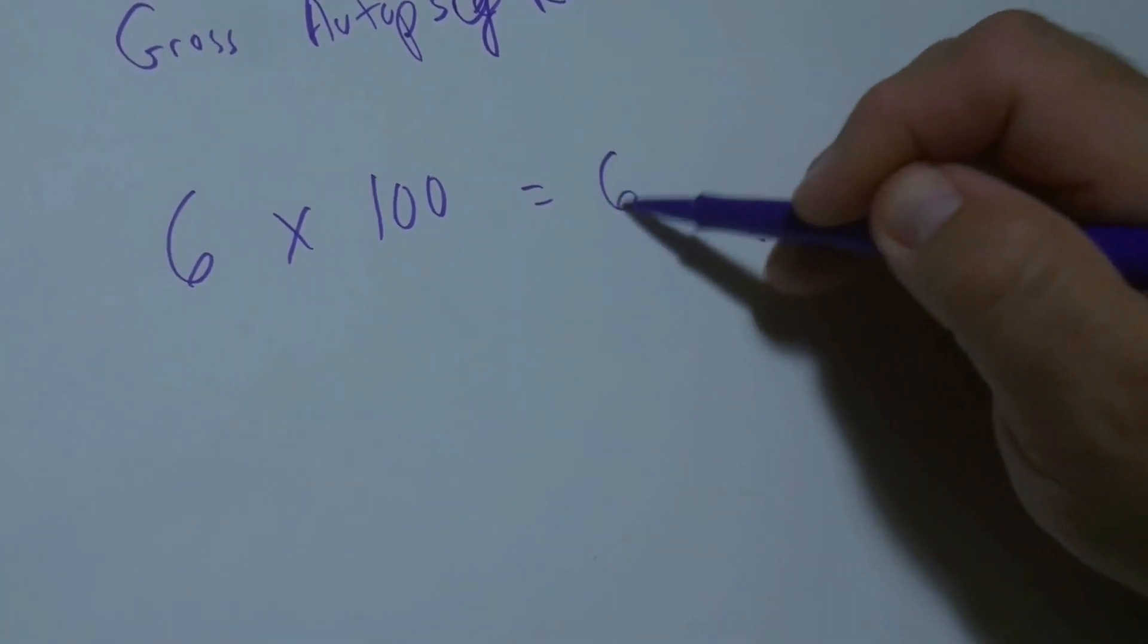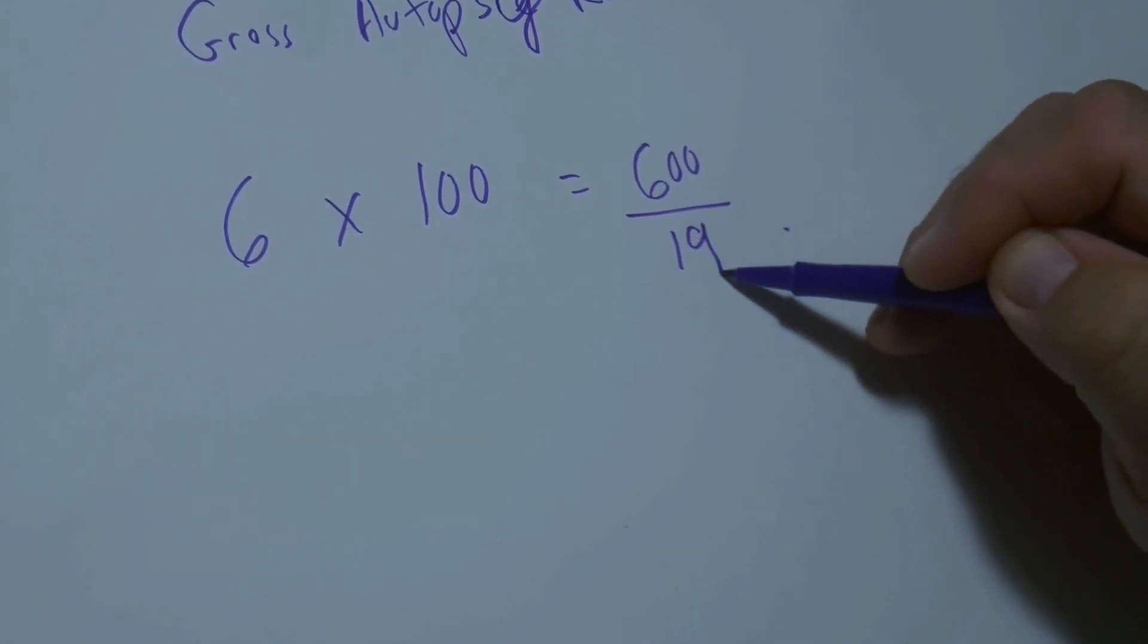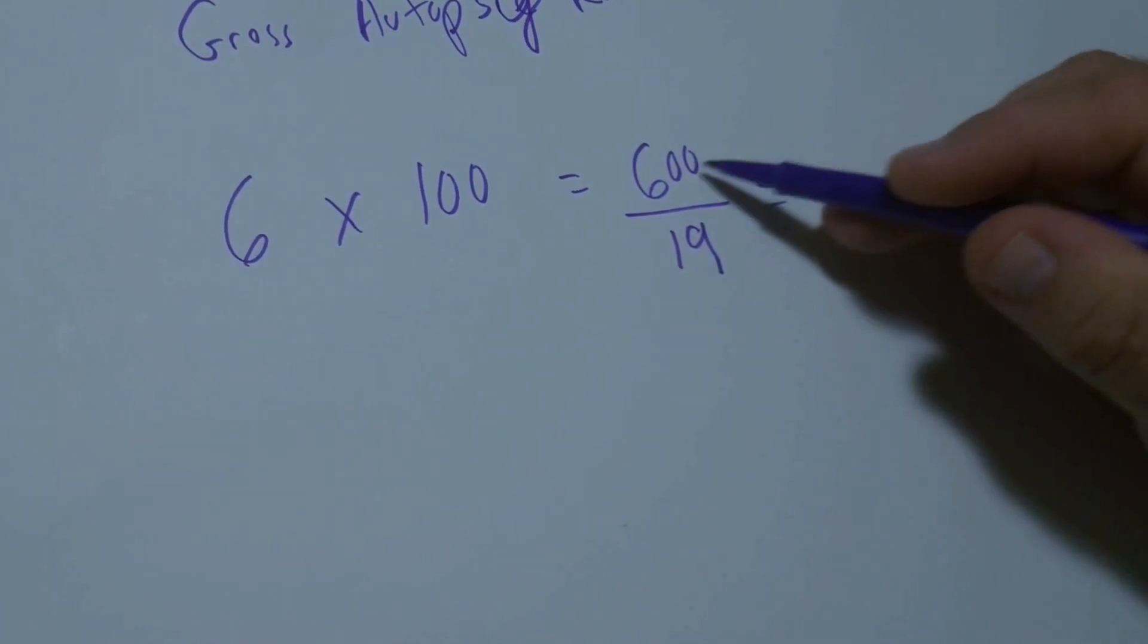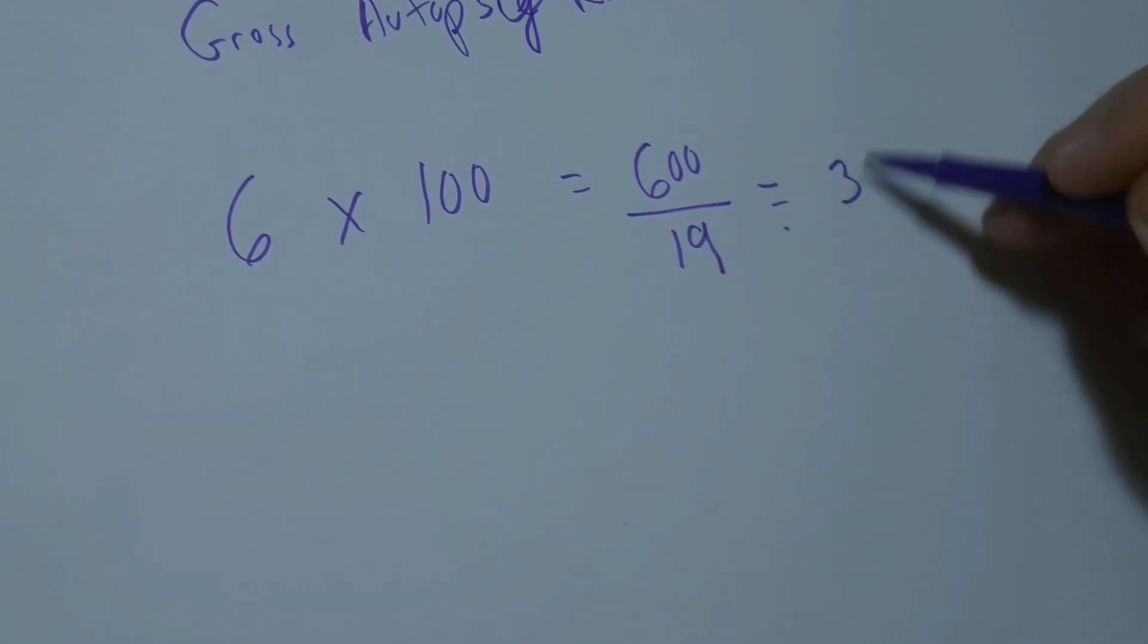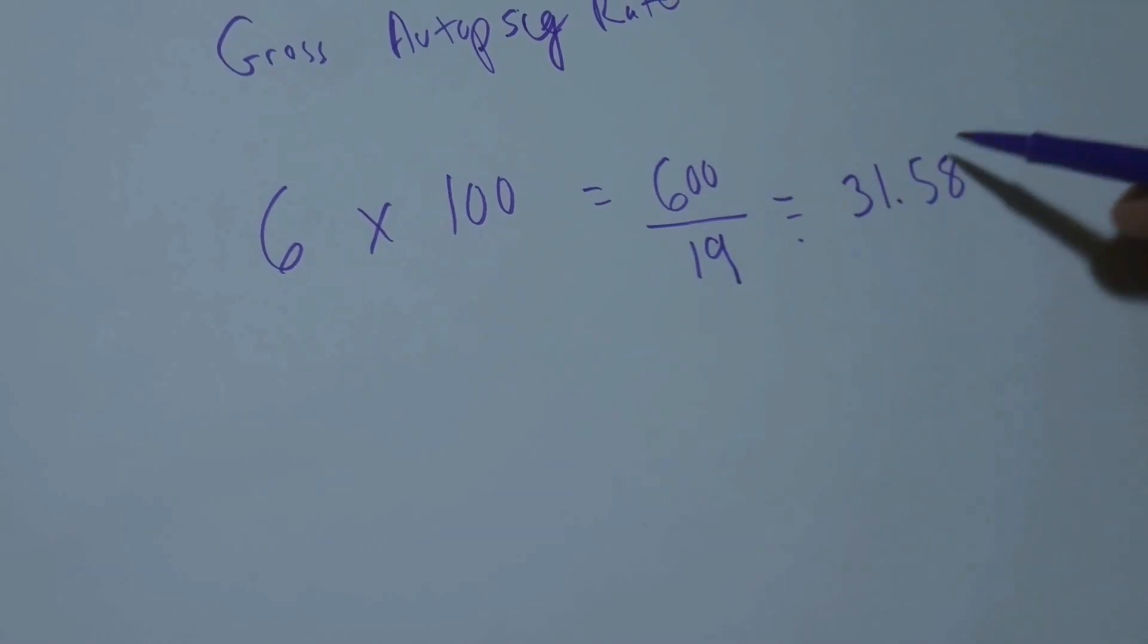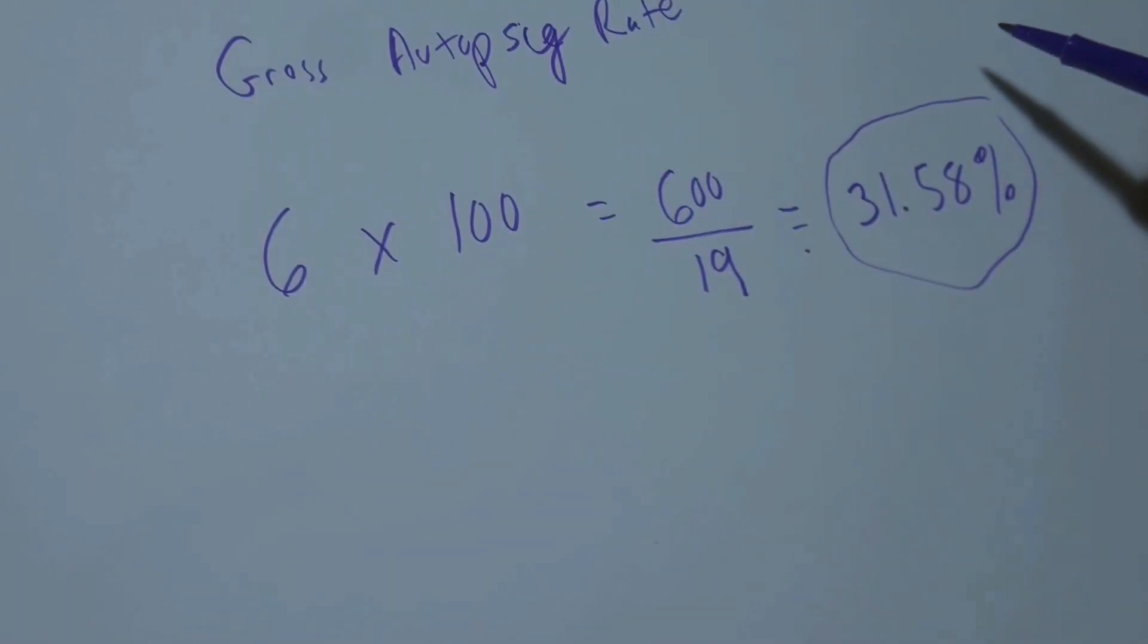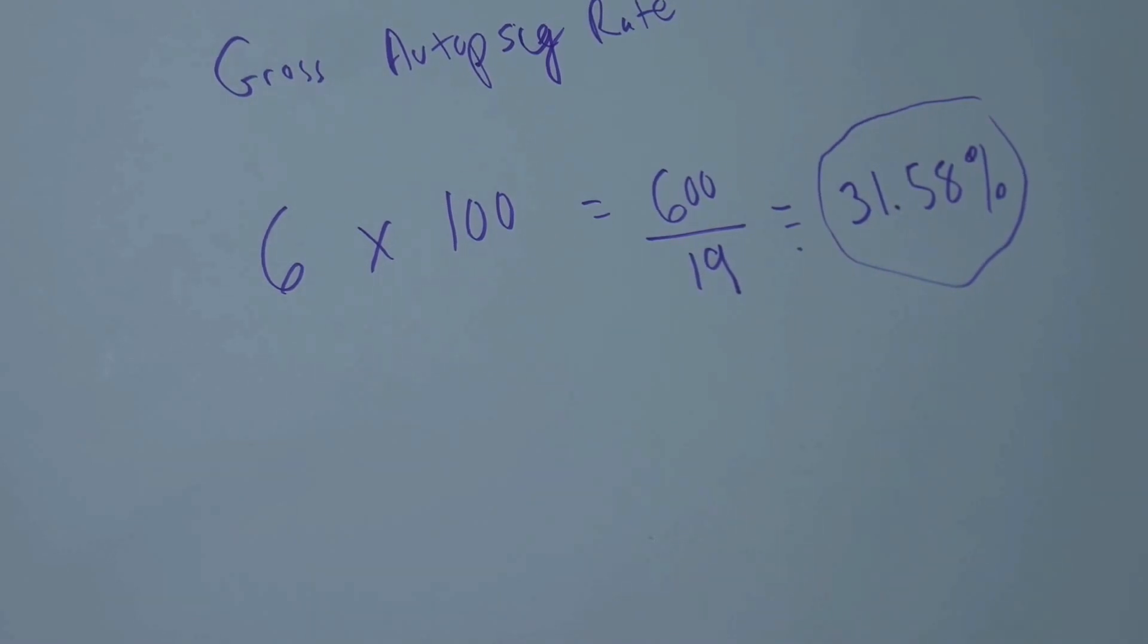So 6 times 100 is 600 and I'm going to divide it by the total inpatient deaths which is 19. So 600 divided by 19 is 31.58. And since we had multiplied it by 100, we know that this is a percentage. So 31.58% is our gross autopsy rate.